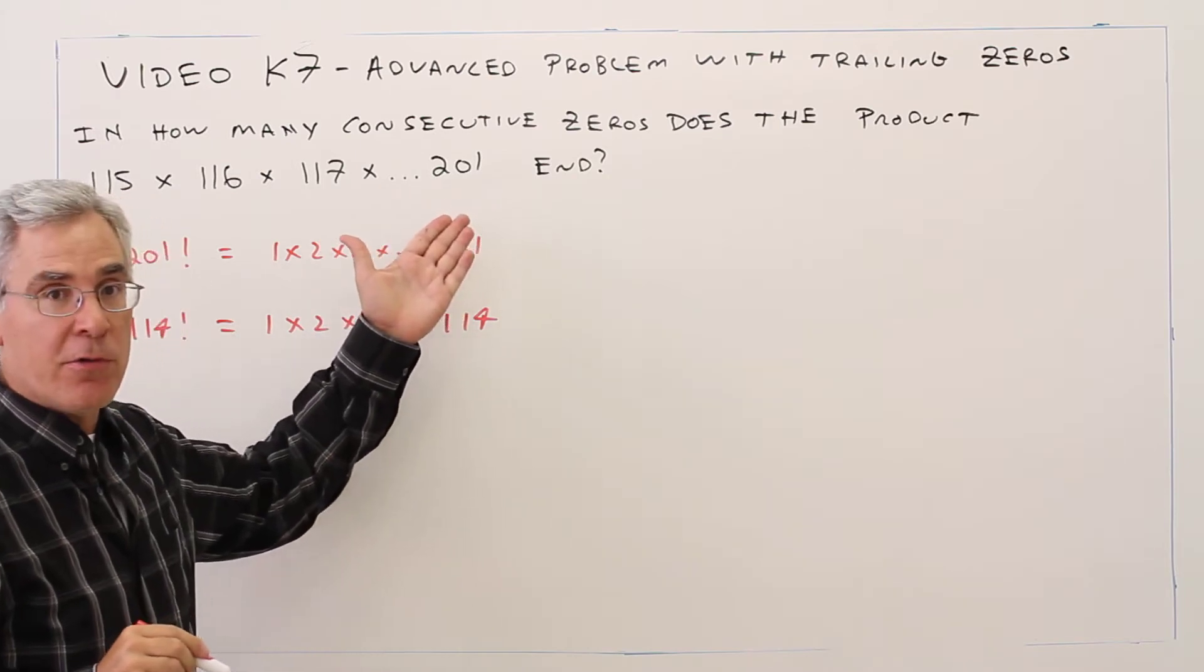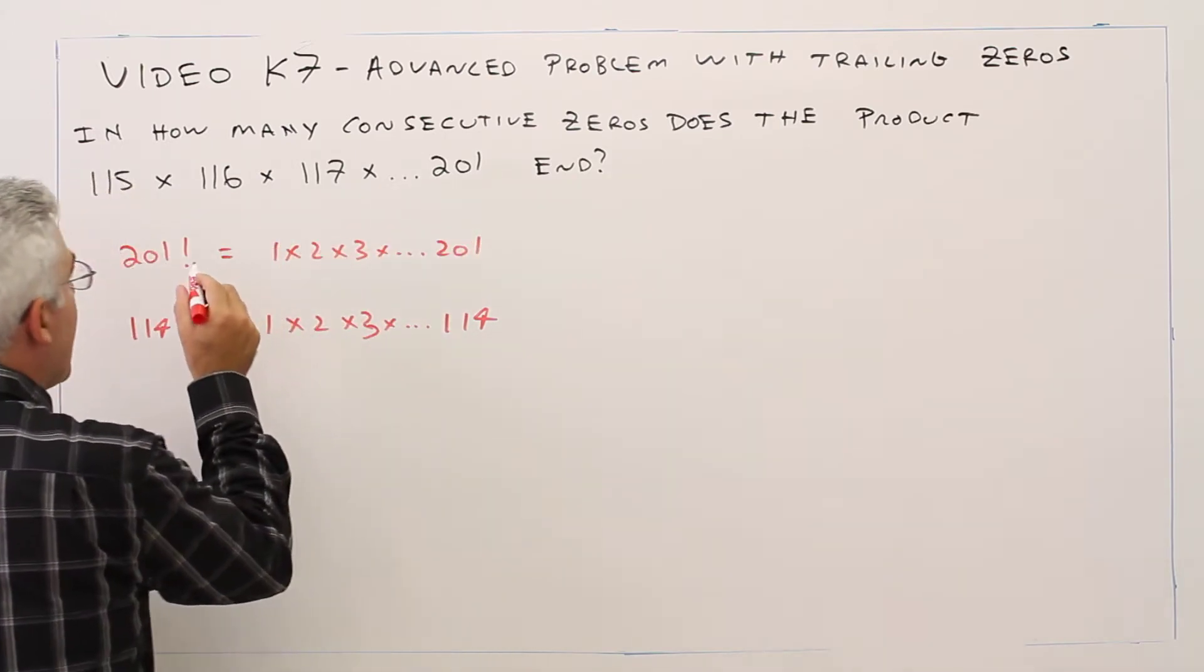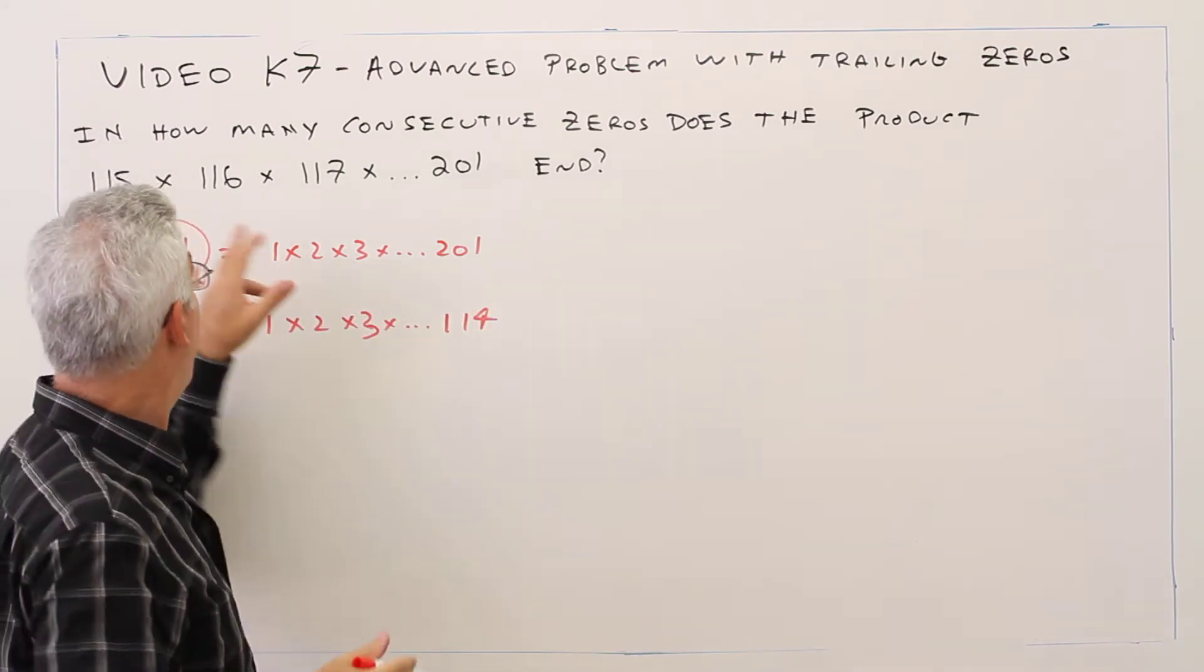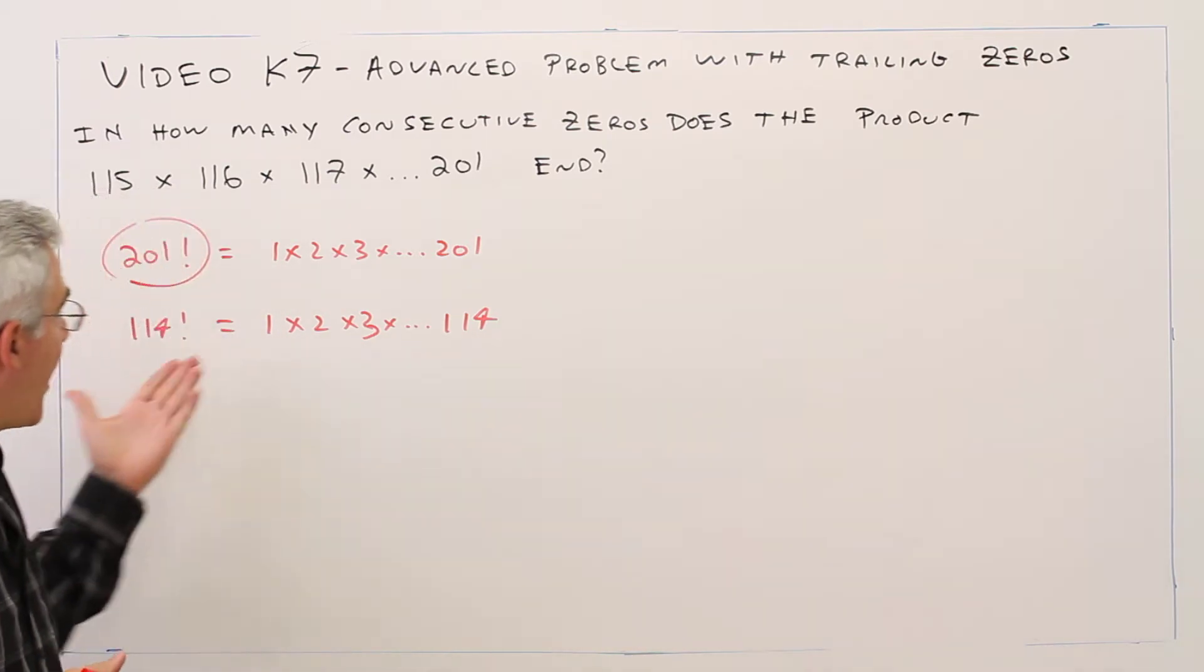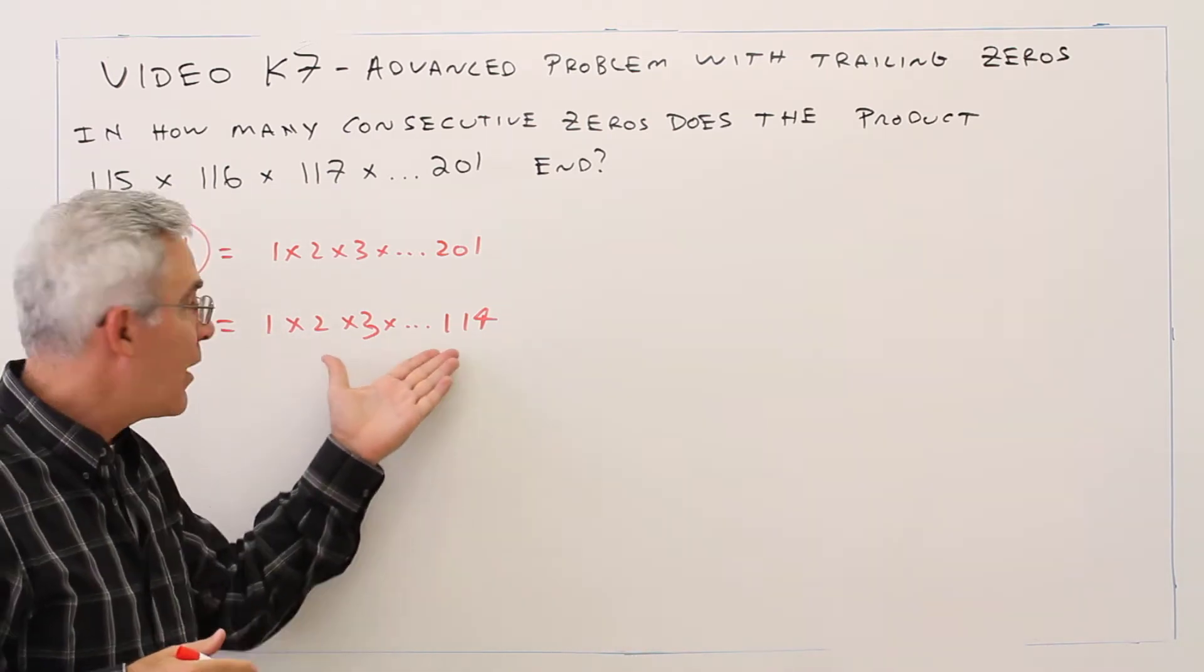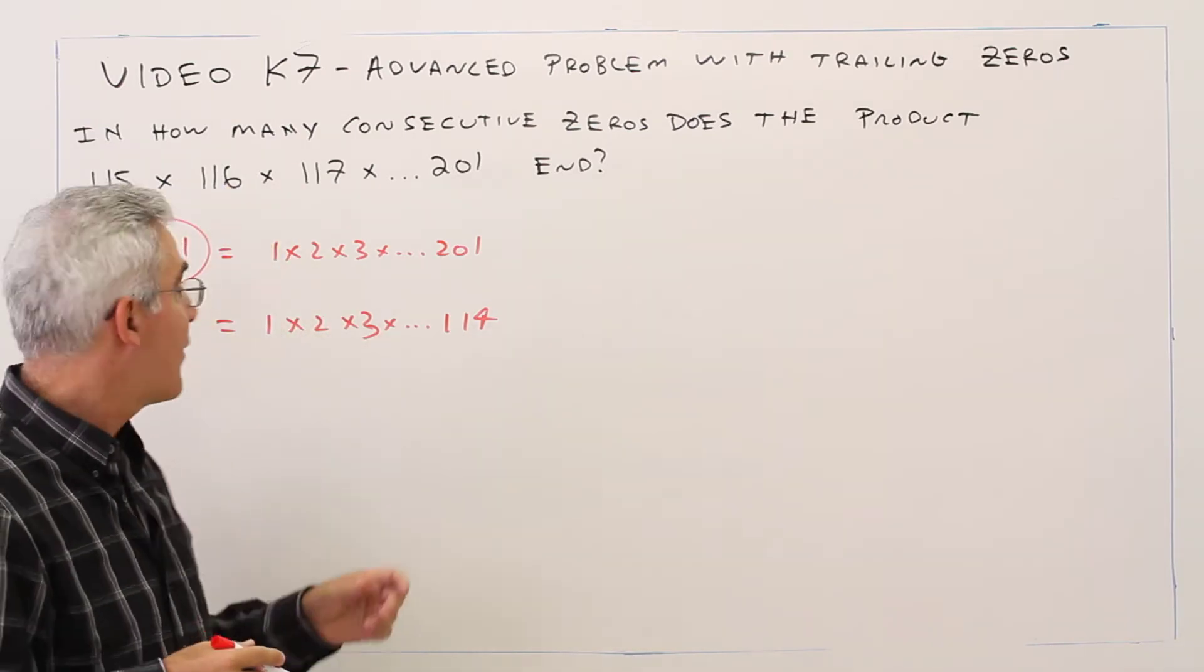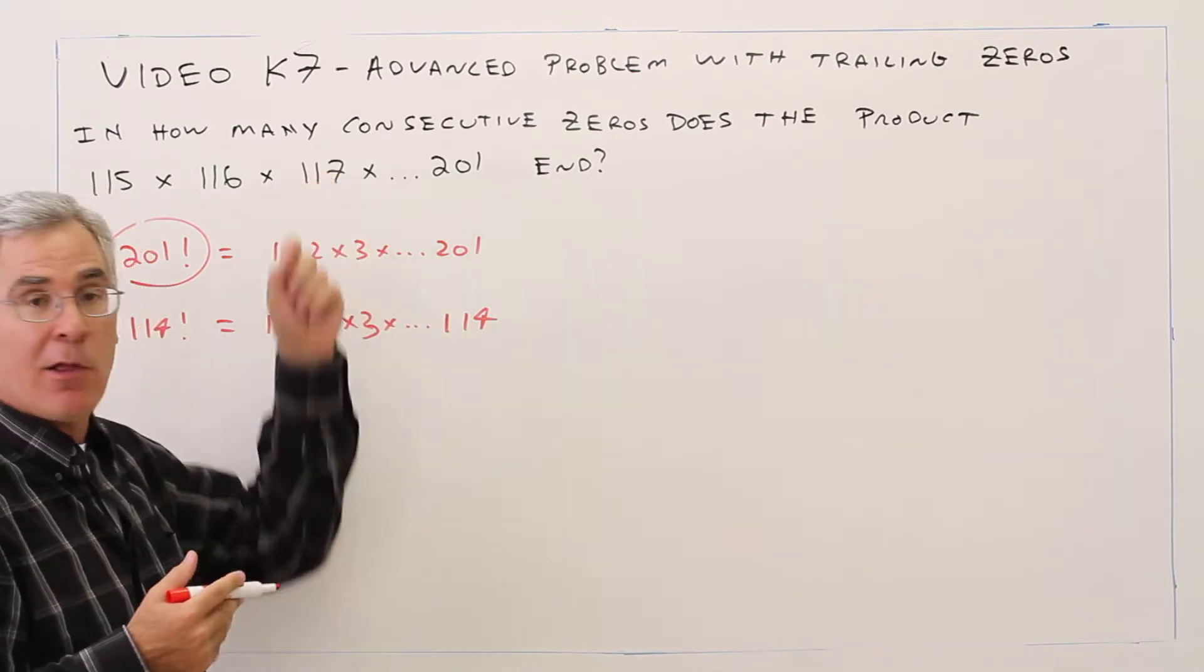So I can find all the trailing zeros in 201 factorial, but I'll have too many because I just want to start at 115. Then I'll subtract away all the zeros in 114 factorial, the things I don't want to include. I'll find these trailing zeros, subtract these, and my result will be what I want.